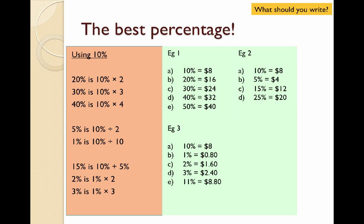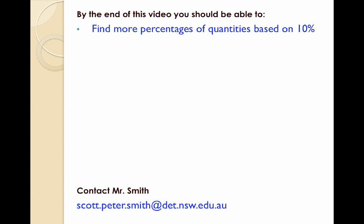For example, for 20% we take 10% and multiply it by 2. On the right-hand side, we have different percentages of $80 from our examples that you should write down to understand how to find different percentages. That's it. Hopefully, now you can find more percentages of quantities based on 10%. Good luck.